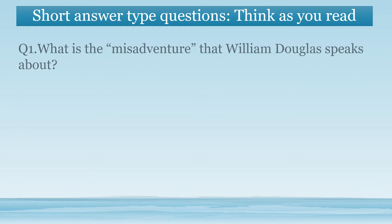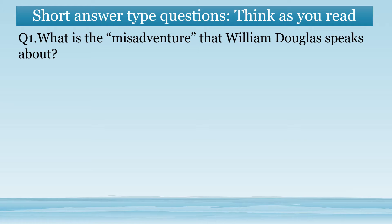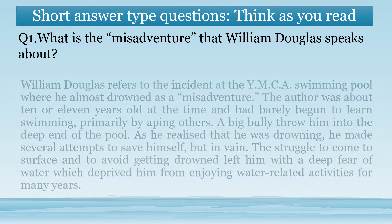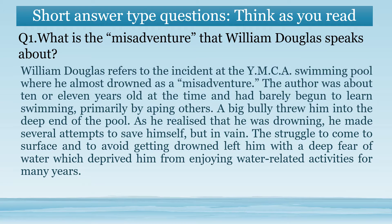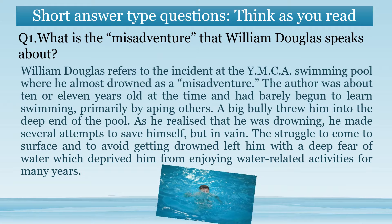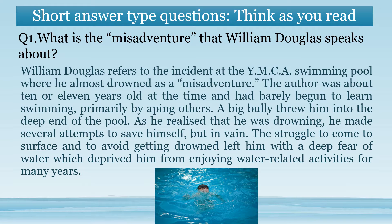Think As You Read, Question number 1: What is the misadventure that William Douglas speaks about? Answer: William Douglas speaks about a terrifying misadventure which happened at the YMCA swimming pool when he was about 10 or 11 years old and had barely begun to learn swimming primarily by aping others.